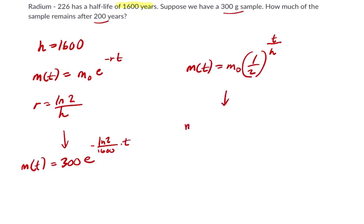On the right-hand side here, we have M of T equals the starting mass, 300, halved some amount of times, where it's T over 1,600, the half-life.